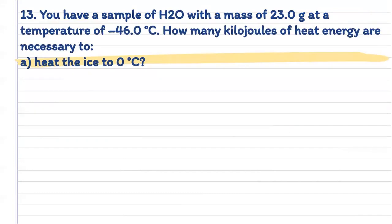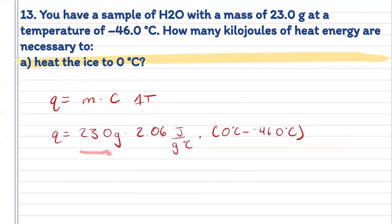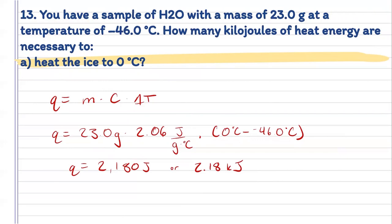Now here's where the fun starts. We have a sample of water with a mass of 23.0 grams at a temperature of negative 46.0 degrees Celsius. How many kilojoules of heat energy are necessary? For part A, we want to heat that ice to 0 degrees Celsius. To heat it up to that point, I'm going to use heat equals mass times specific heat of water times change in temperature. My table gives me the specific heat for solid water since it's ice. My final temperature is 0 degrees Celsius, starting at negative 46 degrees Celsius. Plugging those in, I get 2,180 joules, or 2.18 kilojoules.